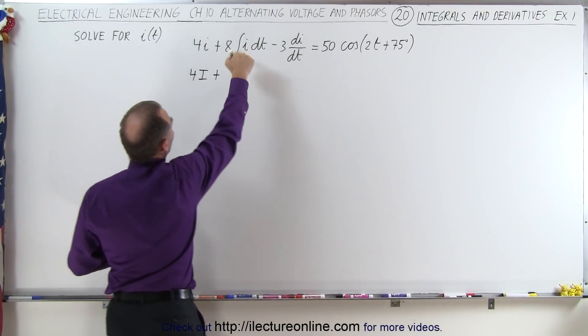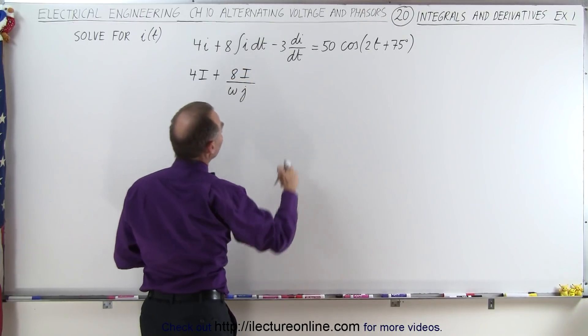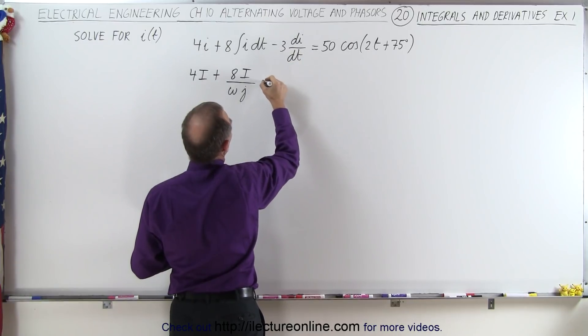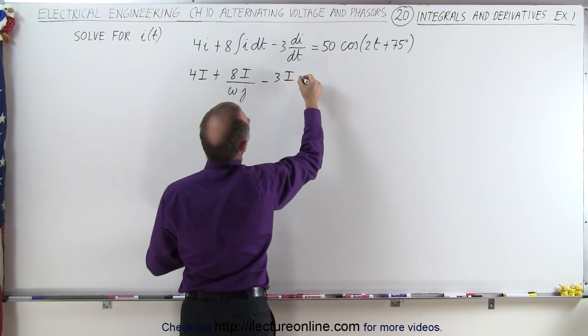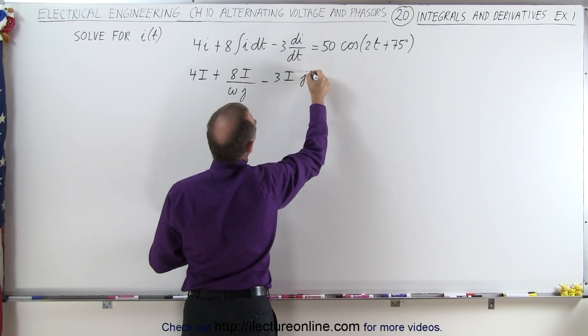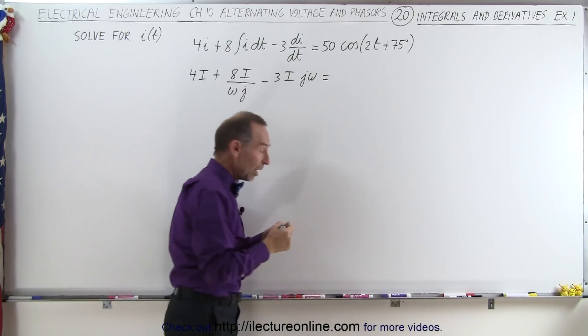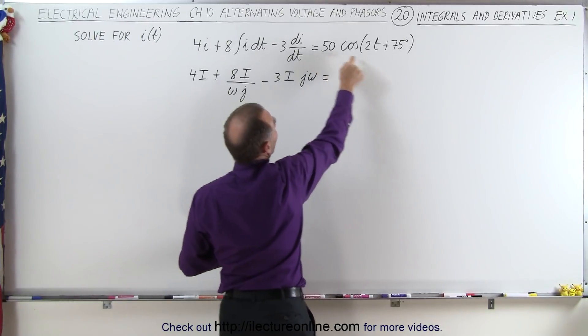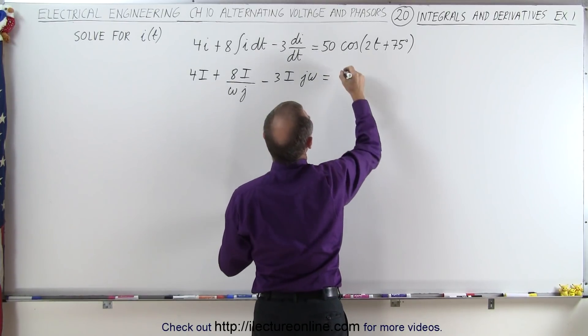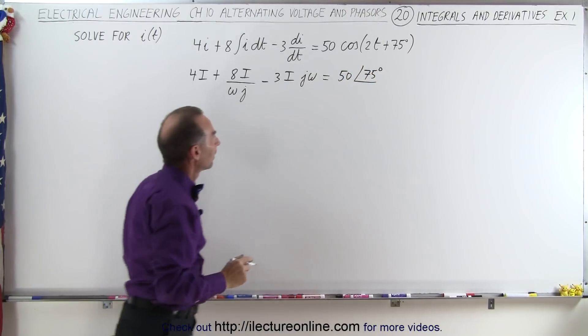plus here since we're integrating, that would be a times i divided by omega times j, because that's how we convert an integral. And then here, since this is a derivative, this would be minus 3 times i times j times omega. And that would be equal to the right side of the equation. Now we can also convert that from the time domain to the phasor domain. We're given the magnitude and we're given the phase angle, so this becomes 50 times the phase angle of 75 degrees.